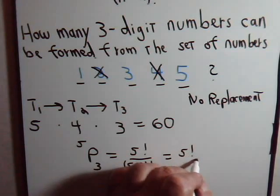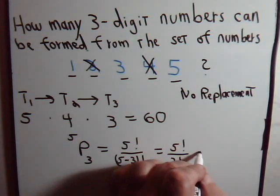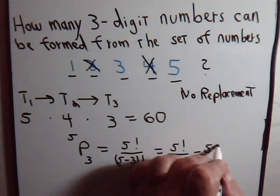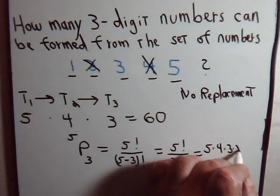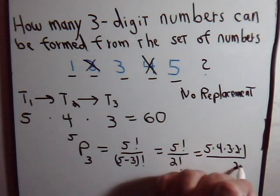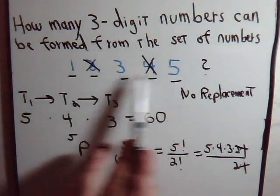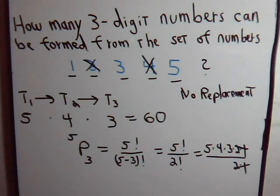That's five factorial divided by two factorial. These are simple. We just write these out like this: two factorial. That comes out again to equal sixty.